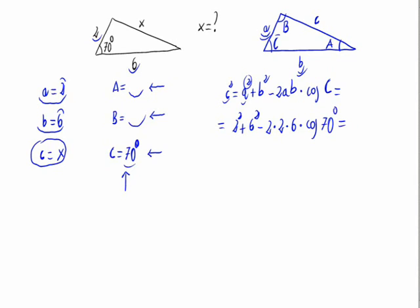This would be 4, plus 6 squared, minus 24, times cosine of 70, which is 0.342. Now you do this operation which gives 31.792.